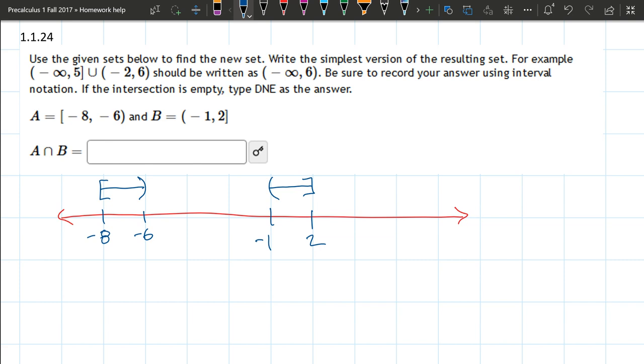They asked to intersect these two. So intersect is the overlap, or which x values are in both sets. Well, any x value in the first set is not in the second set, so there's actually no x values in common to both. You can't write none here, but you're going to write DNE as your answer.